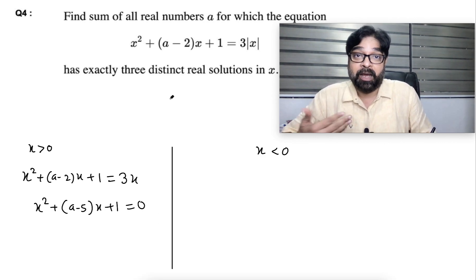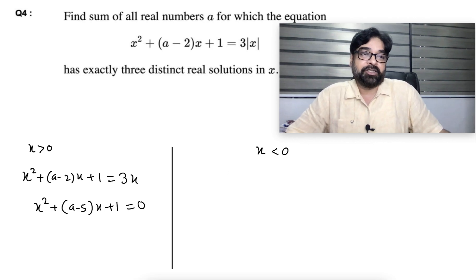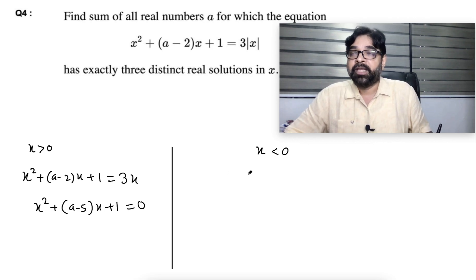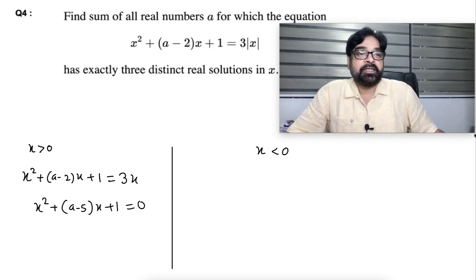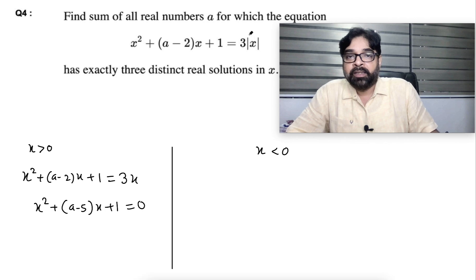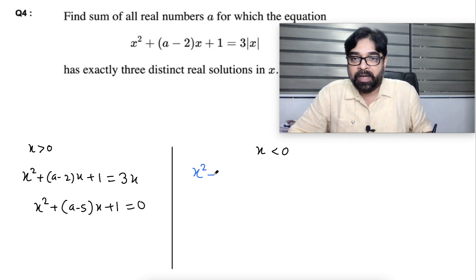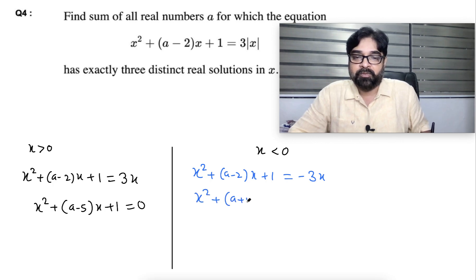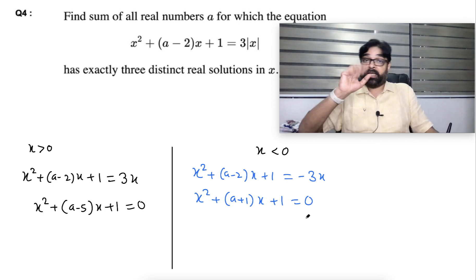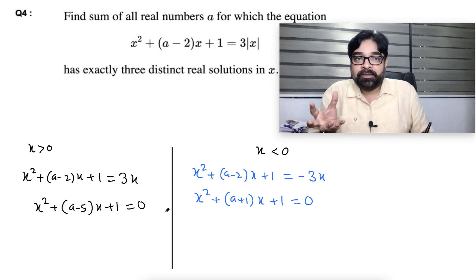Now for case two: if x is less than zero, the modulus |x| will be written as minus x. So we get x squared plus (a minus 2)x plus one equal to minus 3x. Shifting one side, we get x squared plus (a plus 1)x plus one equal to zero. This is the quadratic for case two (x < 0).